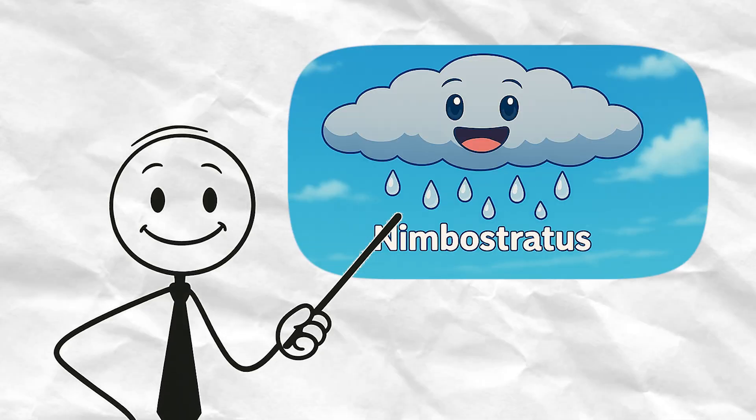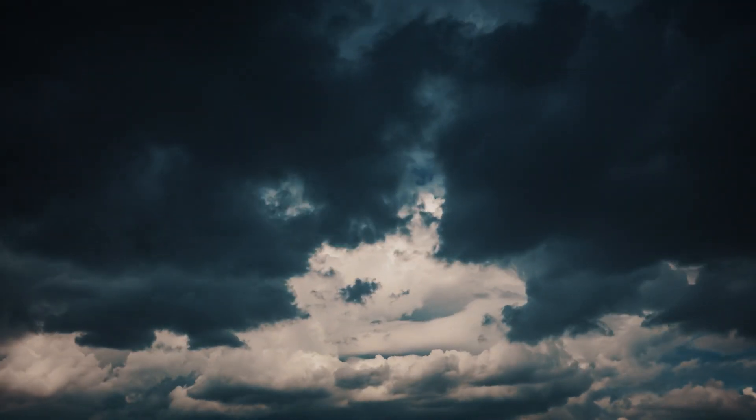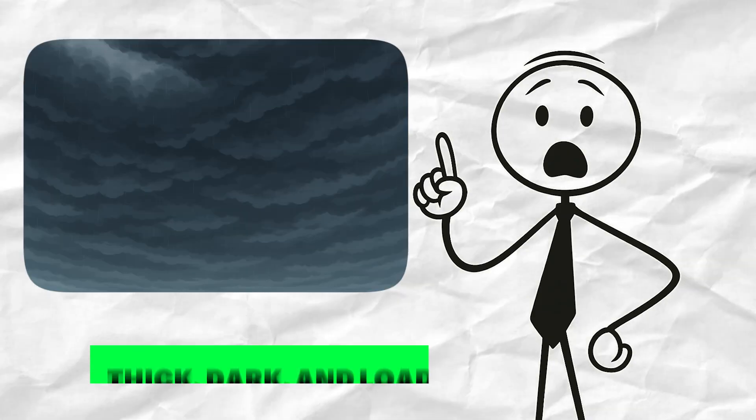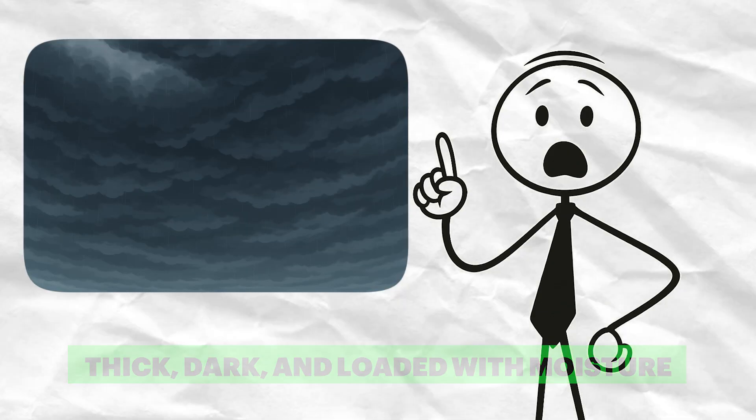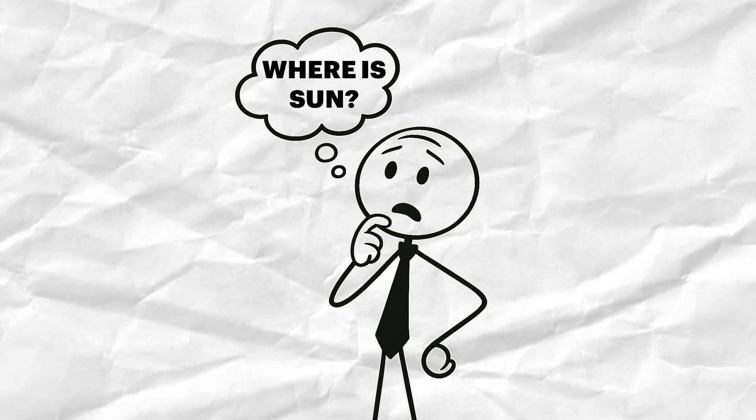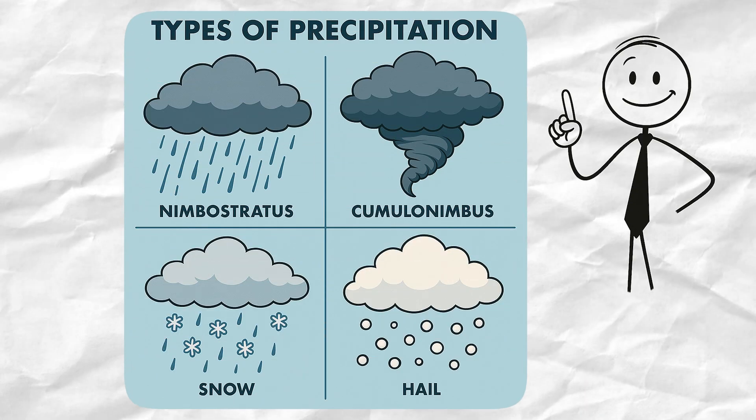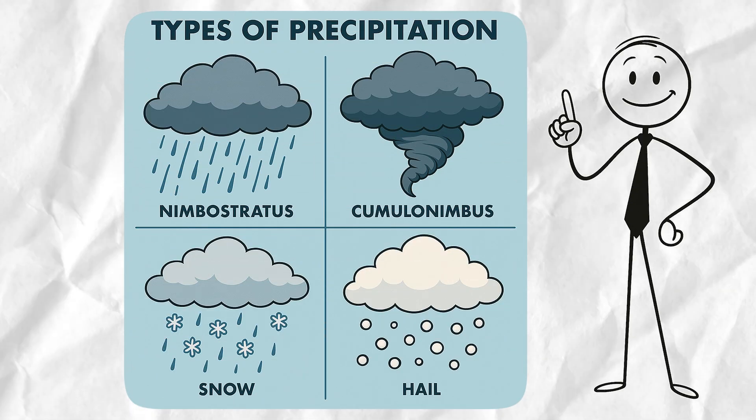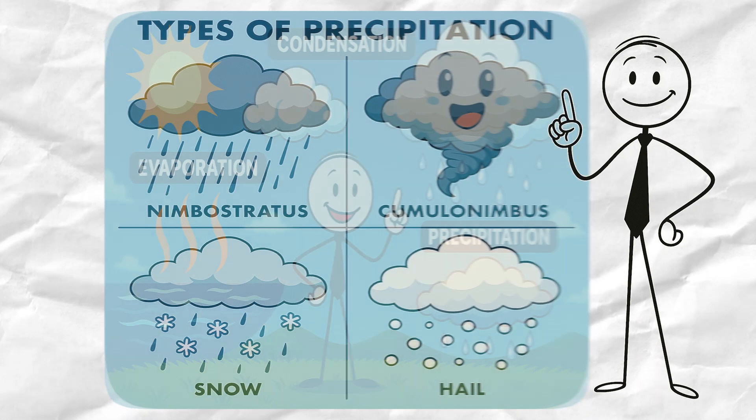And last, we have the nimbostratus clouds. These are your classic, it's going to rain all day clouds. Thick, dark, and loaded with moisture. If one of these rolls in, don't bother hoping for sunshine. So, depending on what kind of cloud forms and what's happening inside it, you get different kinds of precipitation.